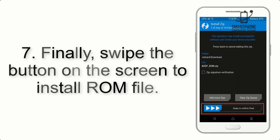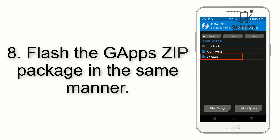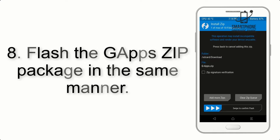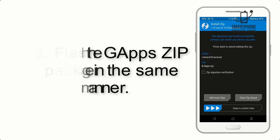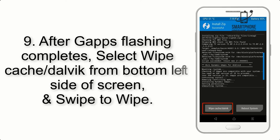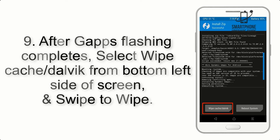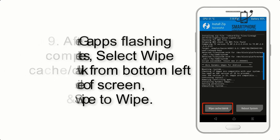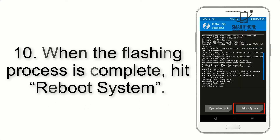Step 7: Swipe the button on the screen to install the ROM file. Step 8: Flash the GApps zip package in the same manner. Step 9: After GApps flashing completes, select Wipe Cache and Dalvik from the bottom left side of the screen and swipe to wipe.